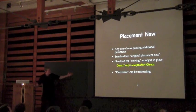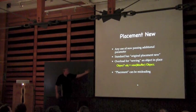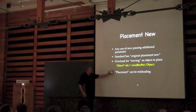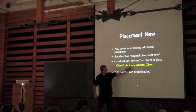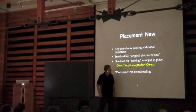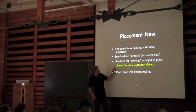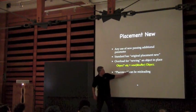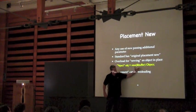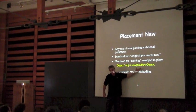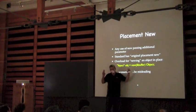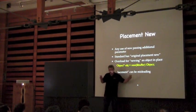Most object-oriented languages allow you to construct an object any place you want, as long as you want it on the heap. C++ lets you construct an object on the heap, on the stack, or any bloody place you want to put it. That's just so C++. The term placement new comes because you can place it in a specific place.